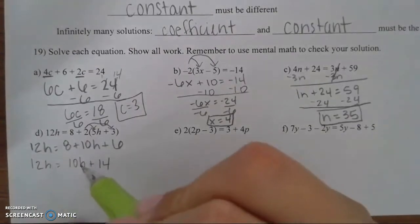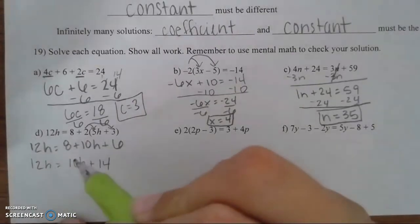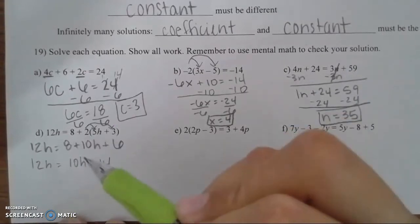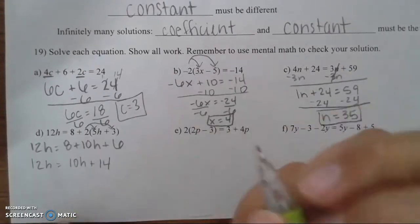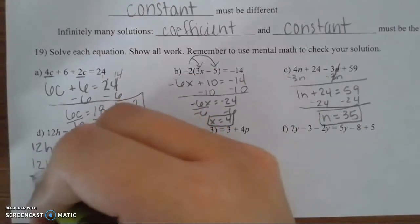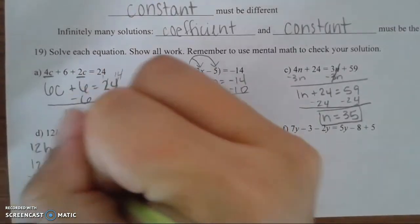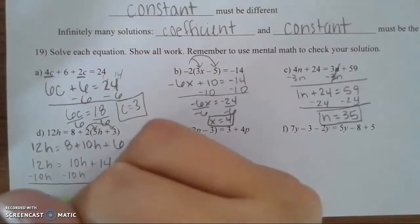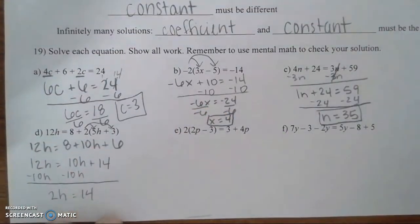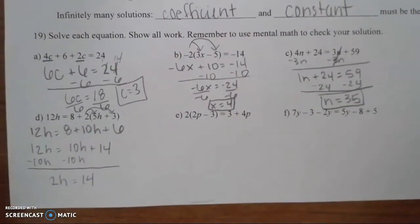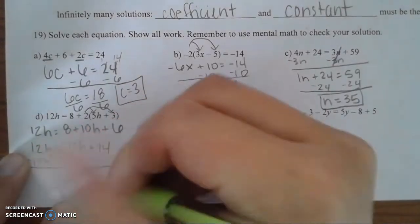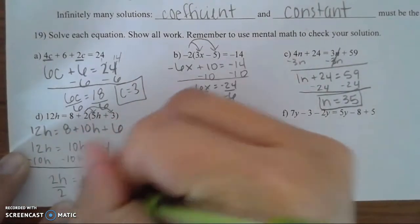Now move all variables to one side — subtract 10h on both sides to get 2h equals 14. Then divide both sides by 2 to get h equals 7.